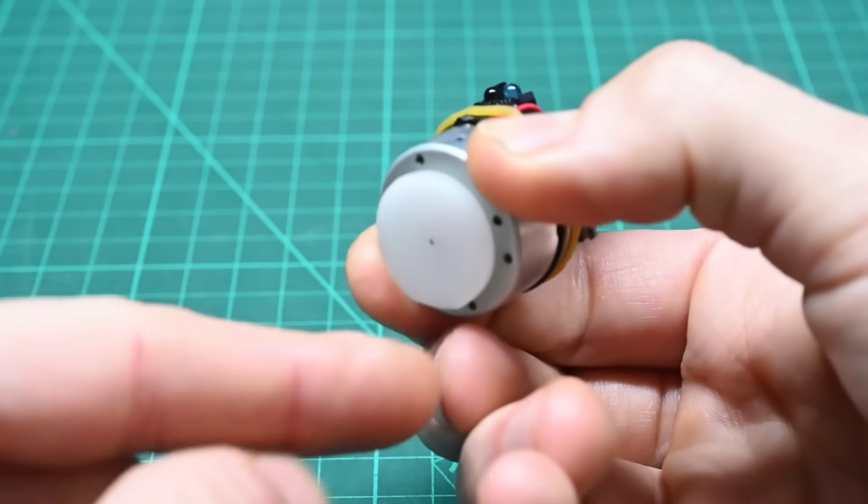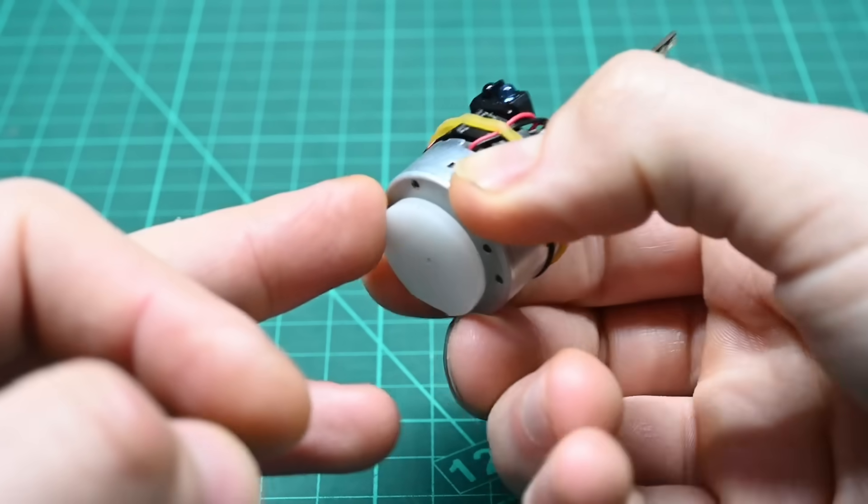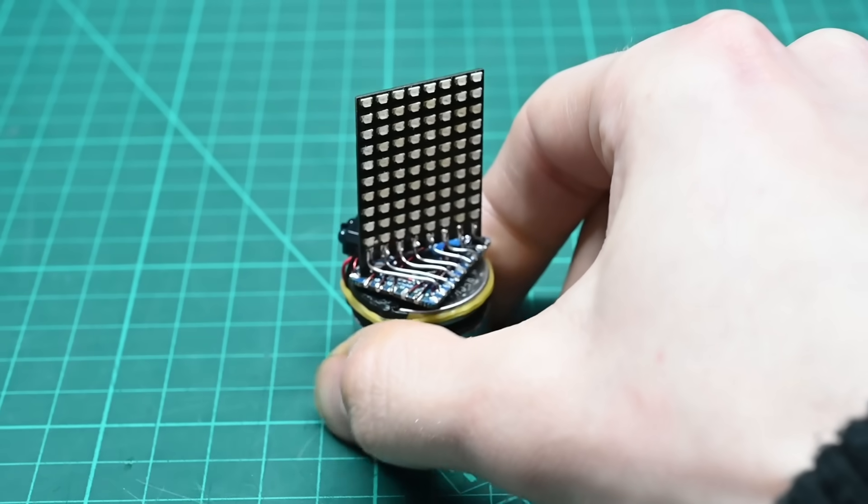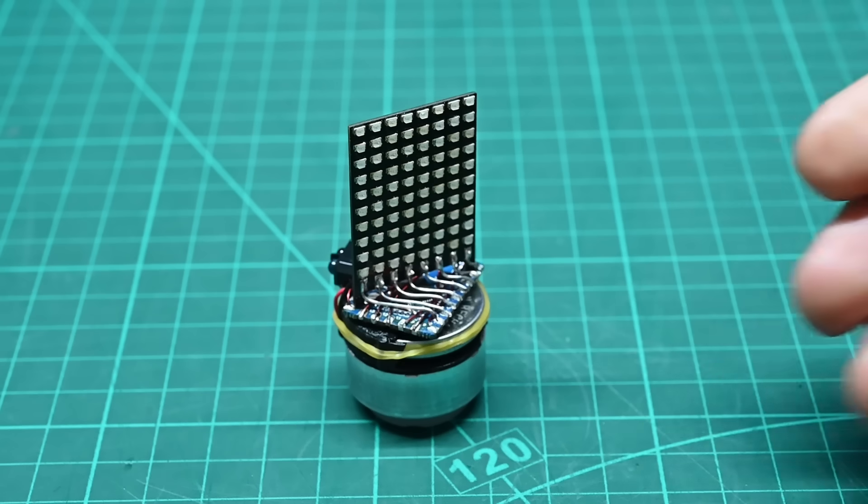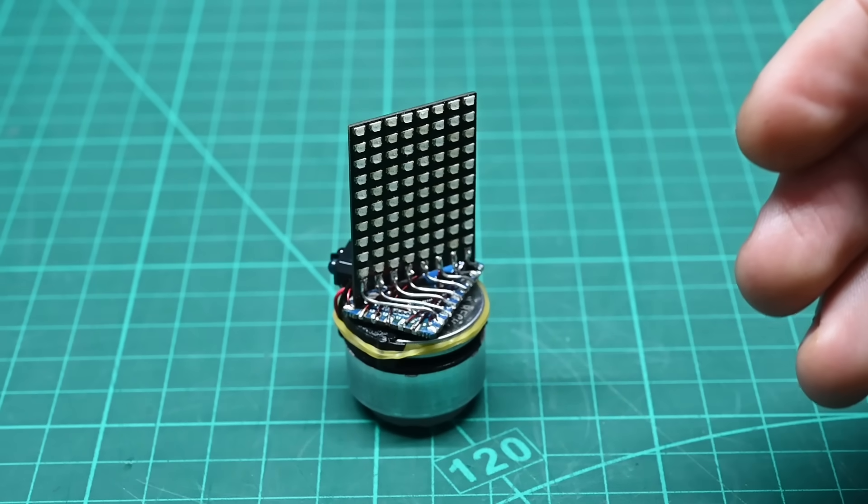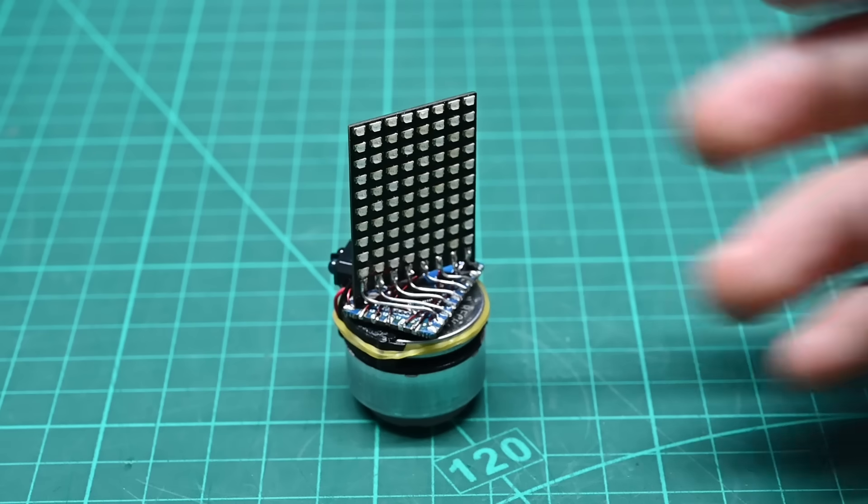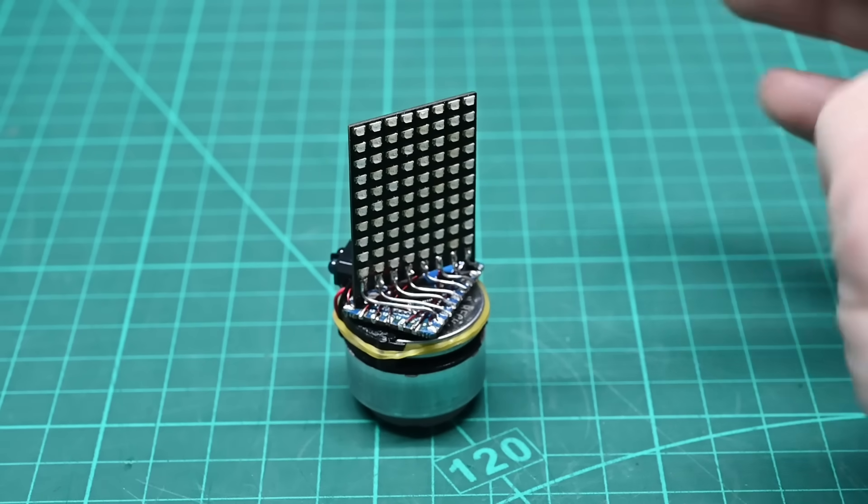I had planned to machine a heavy weight to go at the bottom, but so far this laser cut bit of Delrin seems to be doing just fine. It's no coincidence that this is roughly the size and shape of a tea light candle. The original idea was to build a virtual candle with a holographic flame that could be seen from any angle.